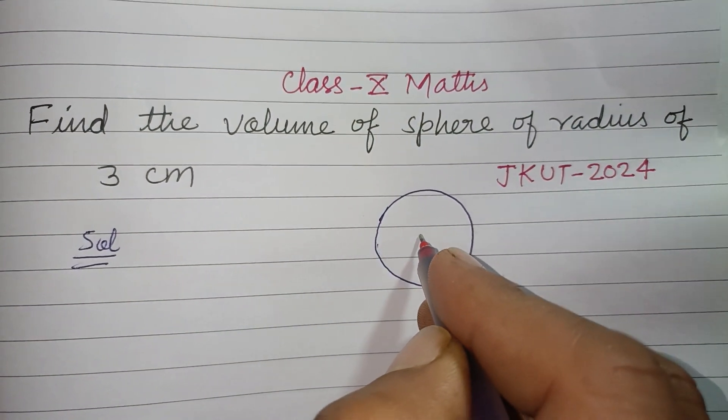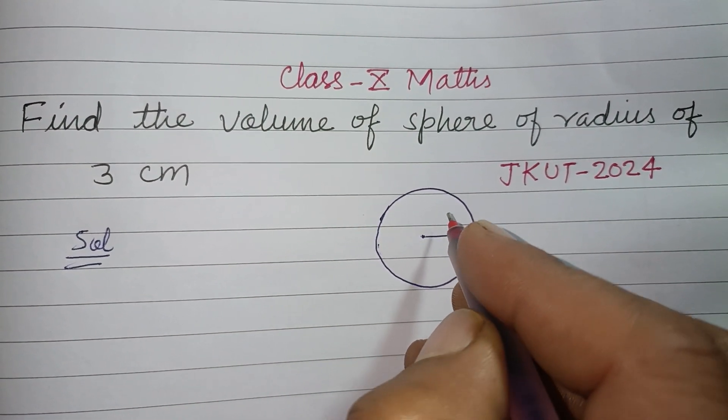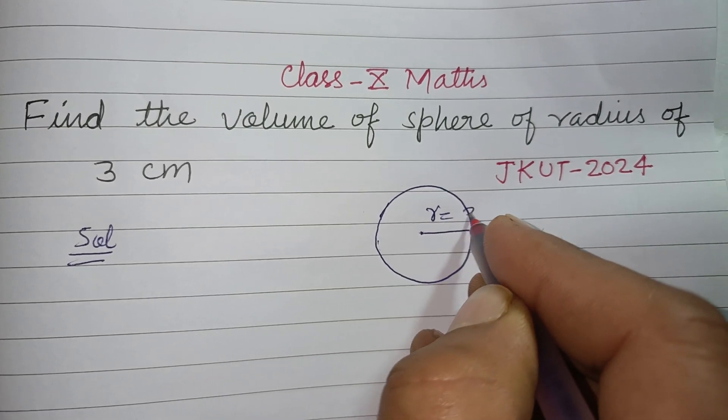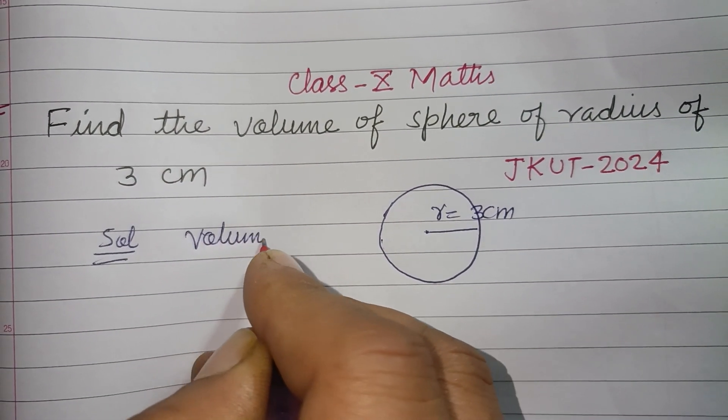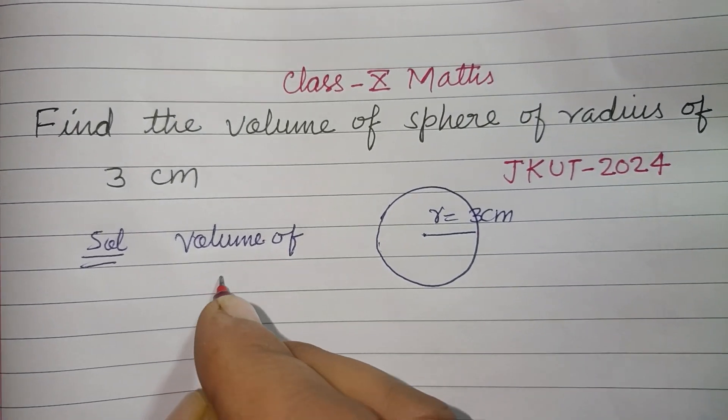So this is the sphere whose radius is given to us as 3 centimeters. Volume of sphere...